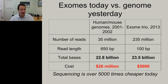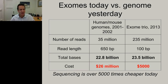For one trio of parents and child we sequenced two years ago at Hopkins, we generated 235 million reads of 100 base pairs each, totaling about 23.5 billion bases. The cost of those three exomes was only $5,000—illustrating that sequencing is over 5,000 times cheaper. This means we have enormous computational challenges and opportunities to develop algorithms for processing this data.